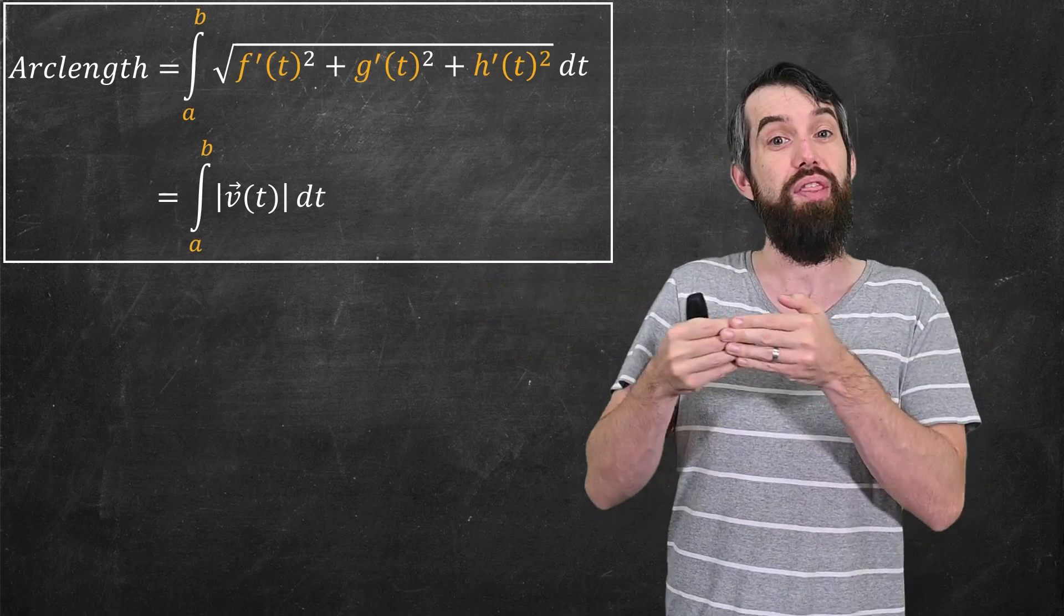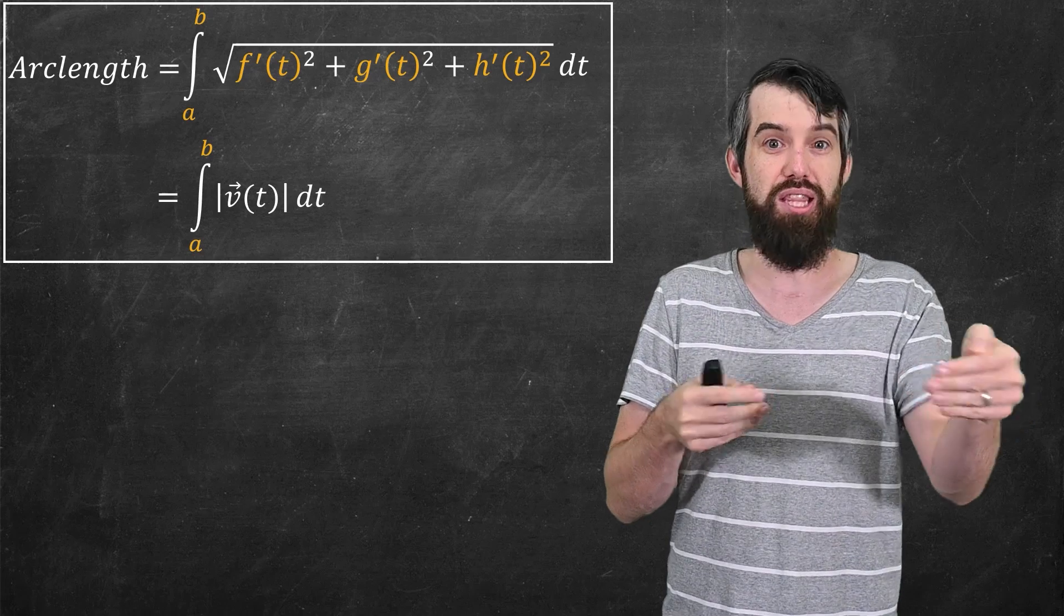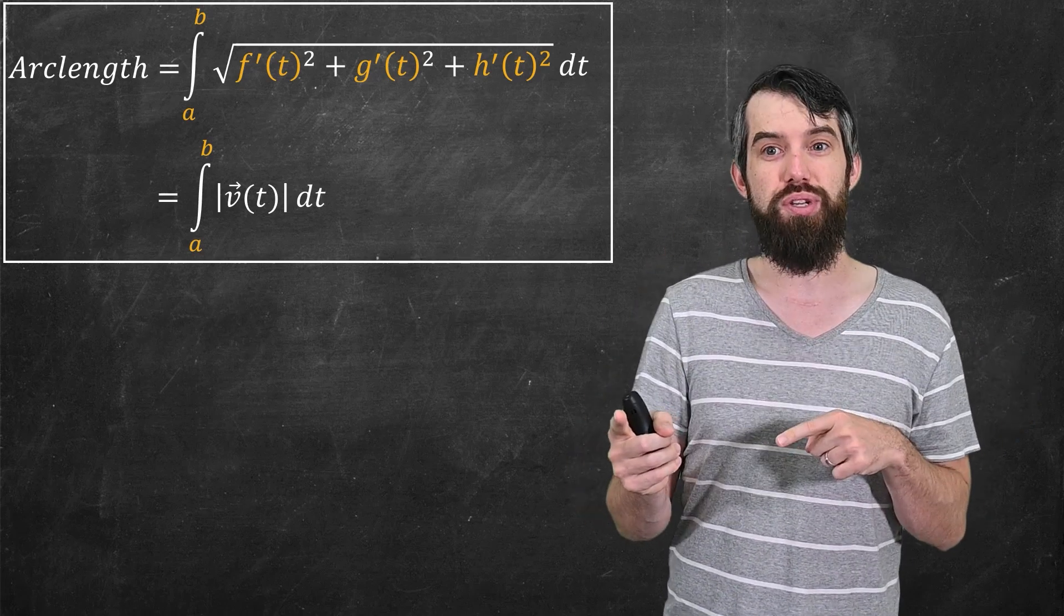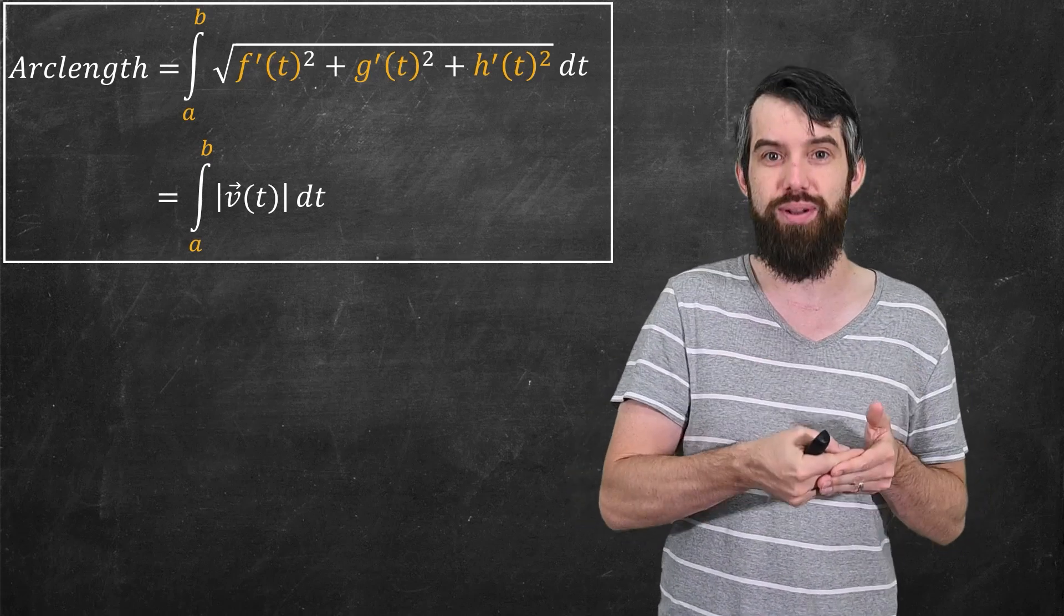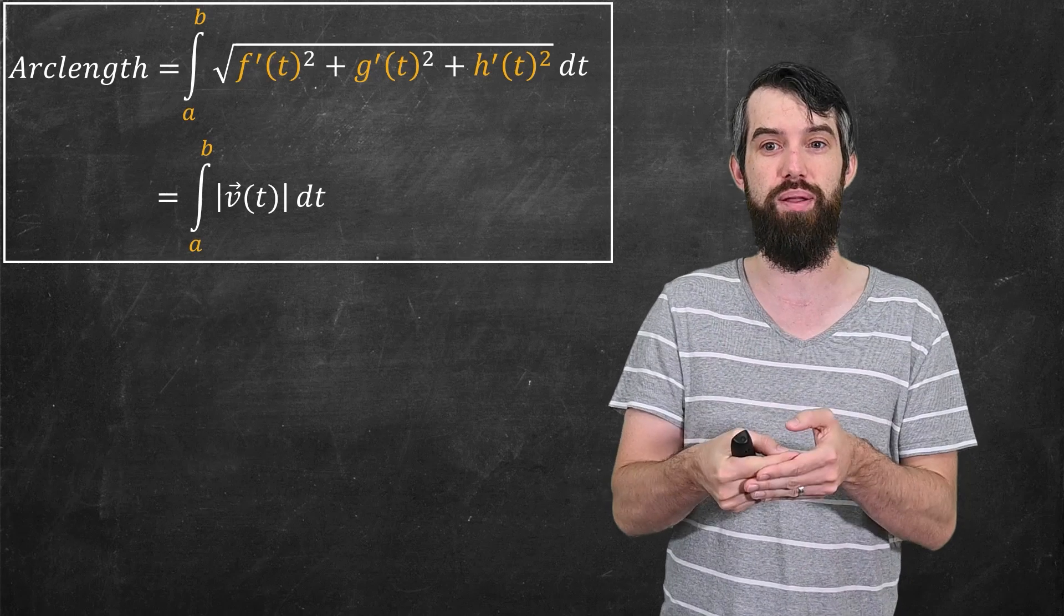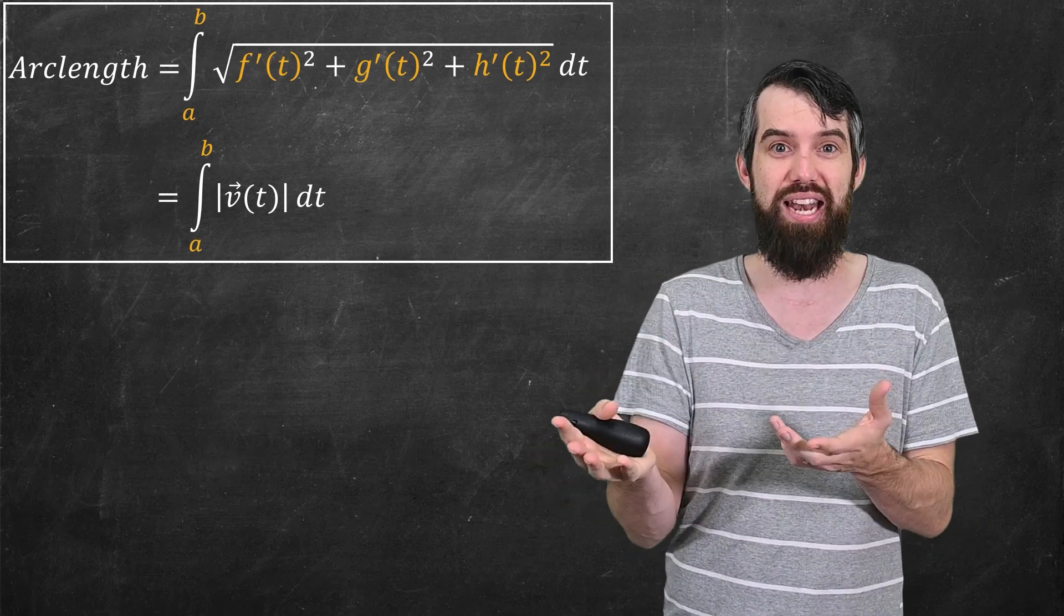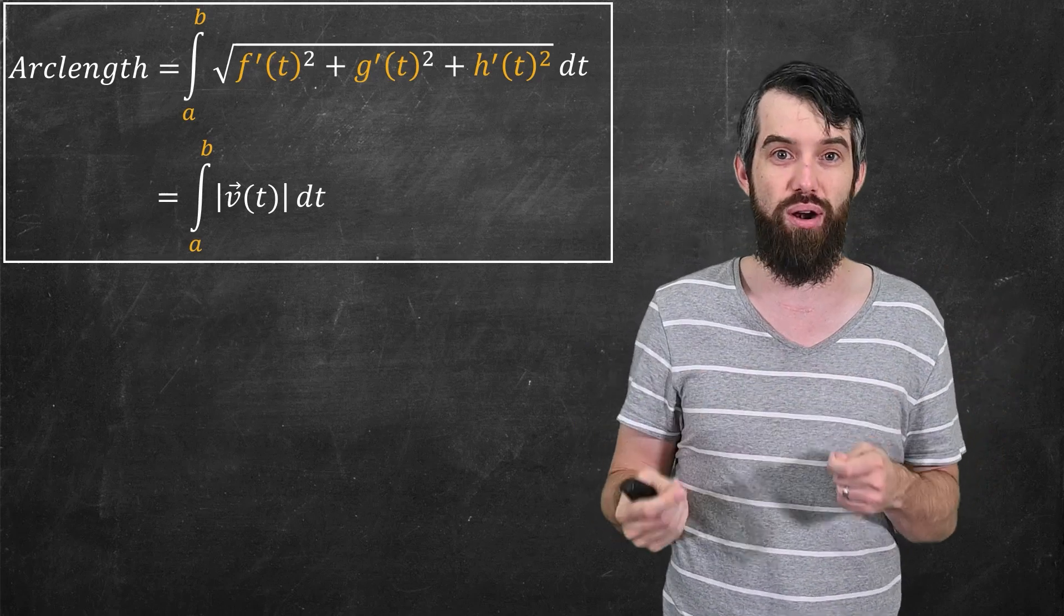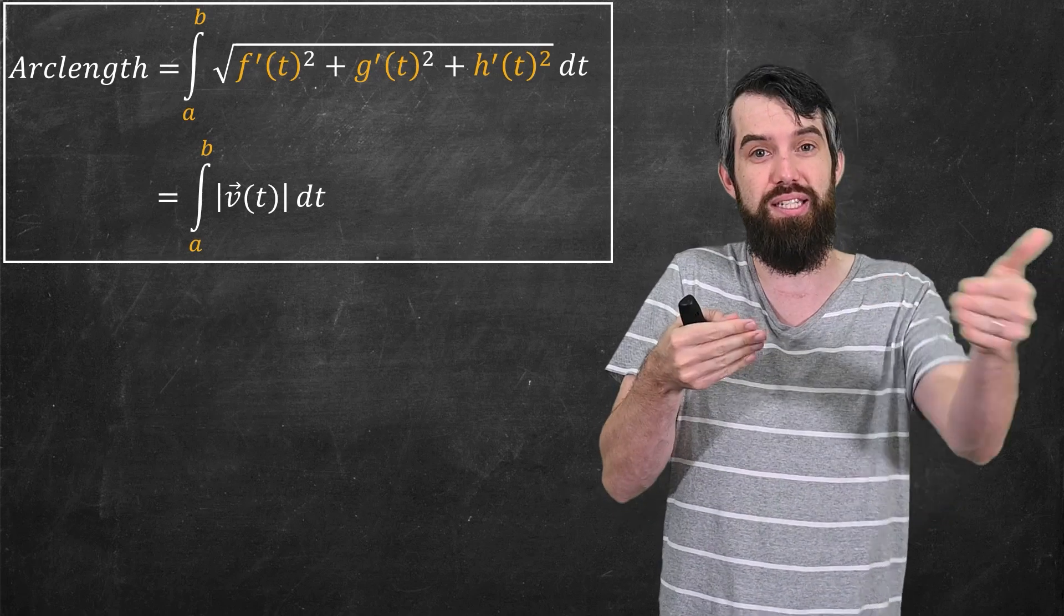So the answer to this problem is arc length. The arc length tells you the distance along the curve that you have traveled. And the formula is that you integrate over all the times, from A to B, the square root of the derivative of the first component squared, the derivative of the second component squared, and the derivative of the third component squared. That integrand looks messy, but the good news is the shorthand is it's just the magnitude of the velocity vector. So in other words, the arc length is that you integrate out the magnitude of the velocity vector, and that tells you the distance that you've traveled.